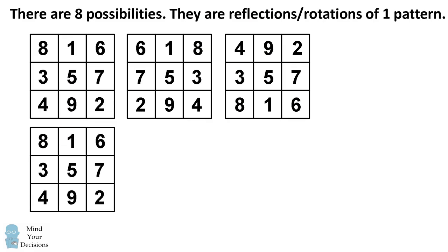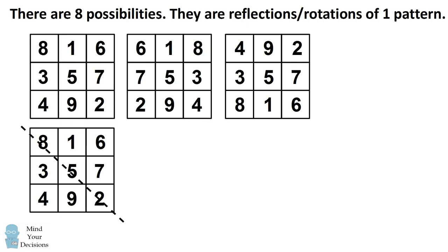Let's make a copy of the first square again. Now I'm going to do a reflection across the diagonal. So this will exchange all the numbers that are across the diagonal with each other. This is another magic square that was in our list.